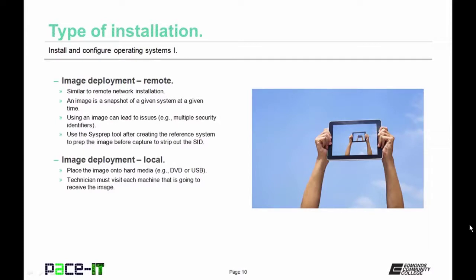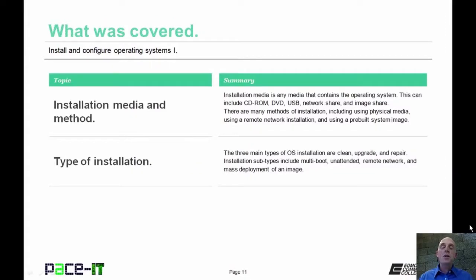Image deployment remote is very similar to a remote network installation. An image is a snapshot of a given system at a given time. Using an image can lead to problems, such as multiple security identifiers — networks and systems don't like that. If you use the sysprep tool after creating the reference system, you can strip out the SID before capturing the image. Image deployment local places the image onto hard media — a DVD, USB, or portable hard drive — and you visit each machine deploying the image one by one.